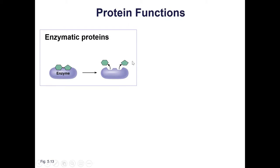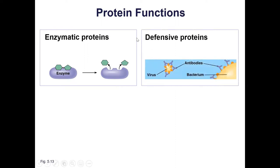The first function is enzymes. You probably know that most enzymes are proteins, and this is a huge, important function to your cells because enzymes allow chemical reactions to occur, and without chemical reactions, our cells would be nothing. Some proteins are defensive proteins — antibodies, which are part of your immune system. This is very essential if you are a mammal trying to fight off any viruses.